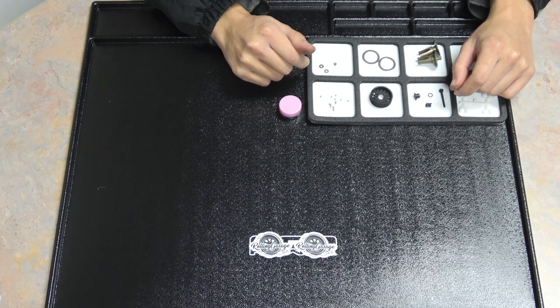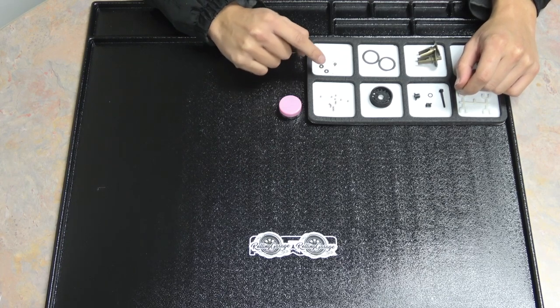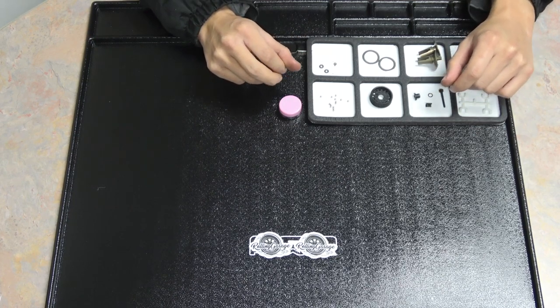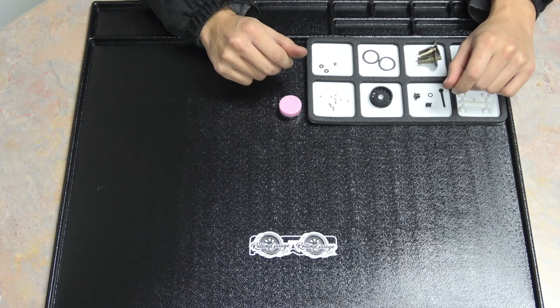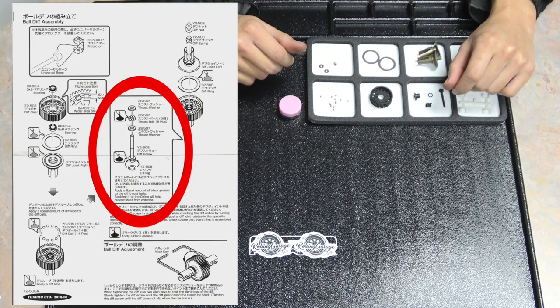We're going to start with probably the hardest part, building the thrust bearing. The thrust bearing consists of these two washers and smaller ball bearings. This Yokomo diff calls for eight of the balls to be used. They give you nine, so one is extra. Be sure to pay close attention to your instructions as to how many balls you need to use for your thrust bearing, as different company diffs can vary.